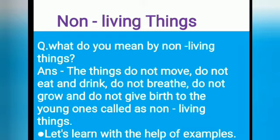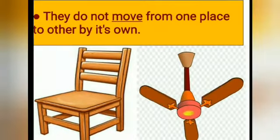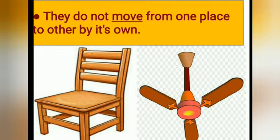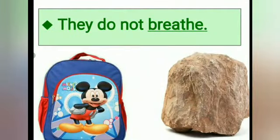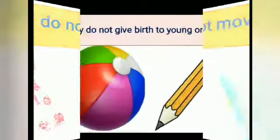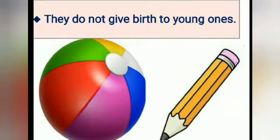Let's learn with the help of examples. See the pictures — chair and fan. They do not move from one place to another by themselves. They do not breathe. That means school bag and stone do not breathe. That's why we call them non-living things. They do not grow, do not move, and do not give birth to young ones. These are the characteristics of non-living things.